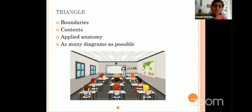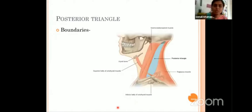Whether it is asked or not, make sure that you write one or two lines on the applied anatomy of whatever topic you are writing about. And of course, draw as many diagrams as possible. Without diagrams, the answers are again incomplete. As compared to your write-up, there should be more and more diagrams. We'll see how the posterior triangle can be described using this method.